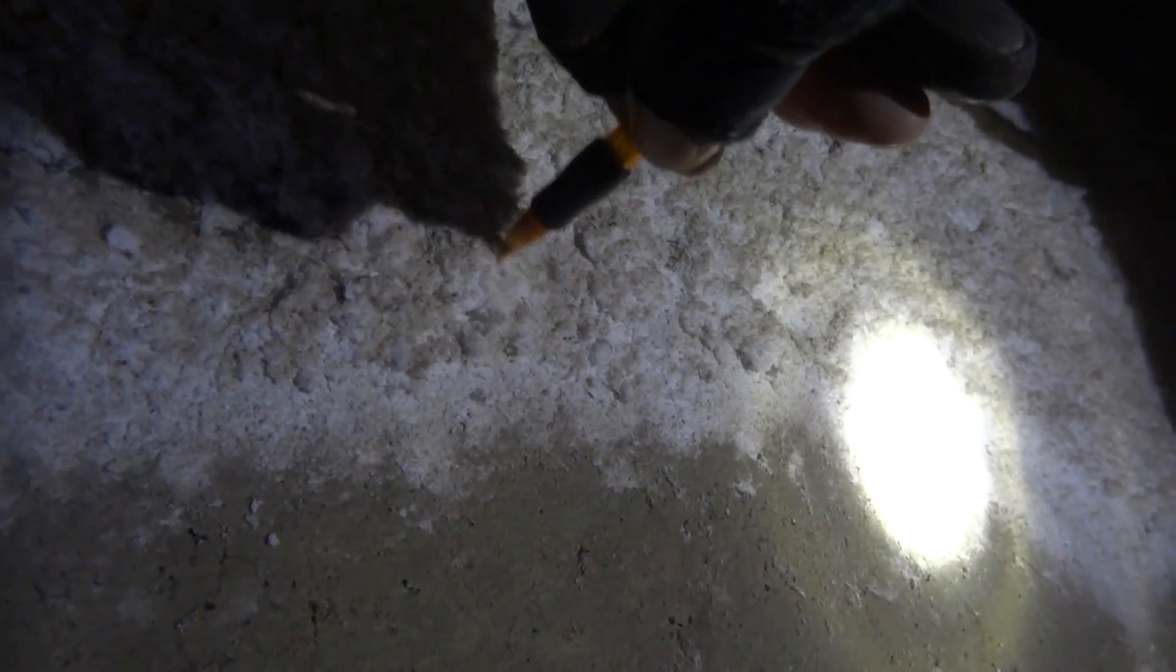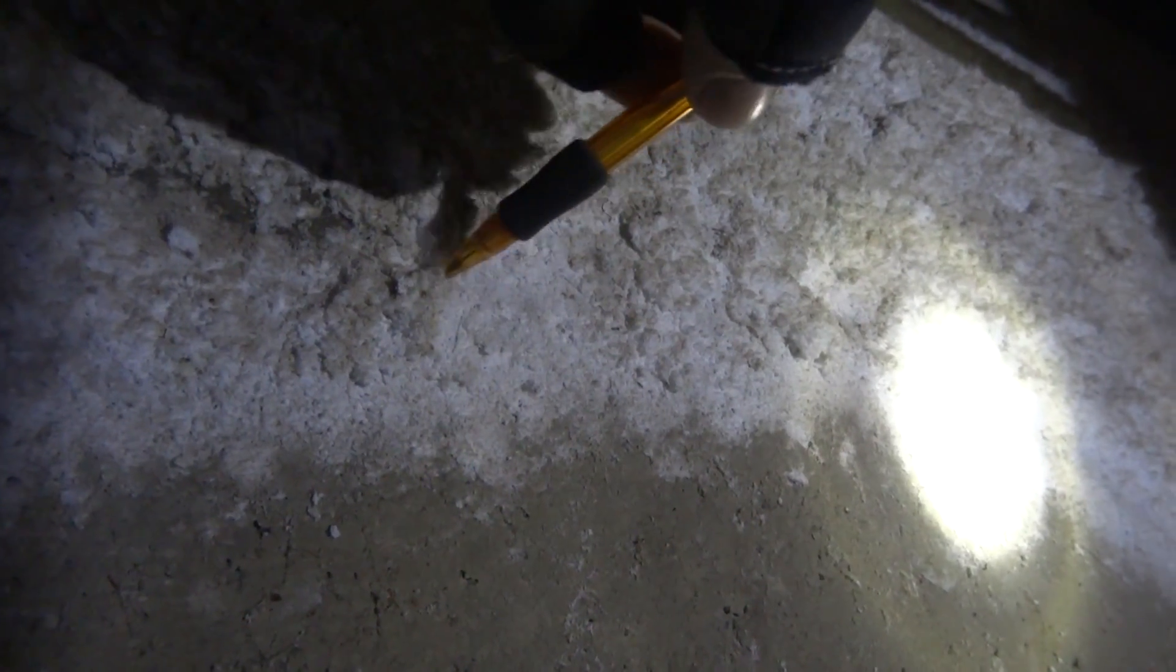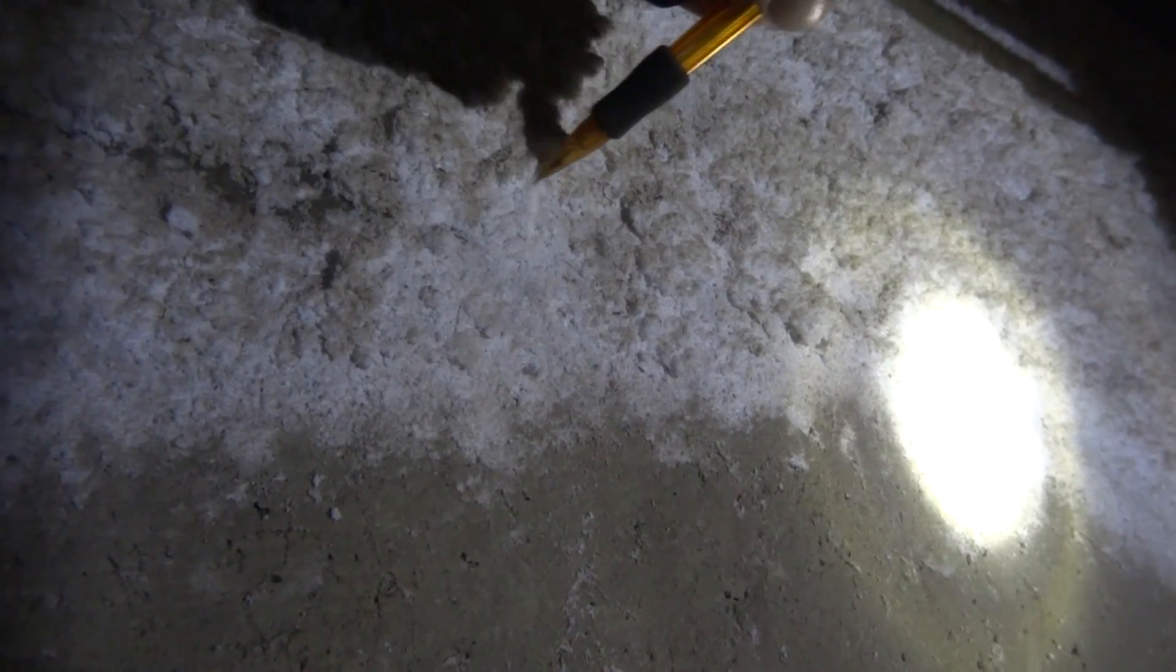It's kind of a powdery white substance, and it's essentially salts that have been brought through the concrete by moisture that's coming in from the outside. When the water evaporates, it leaves the salt crystals built up on the surface.